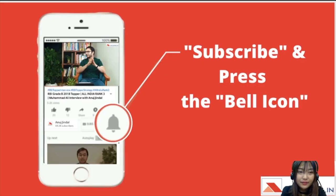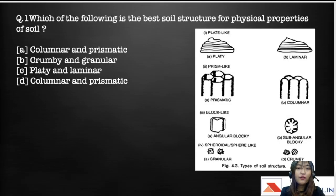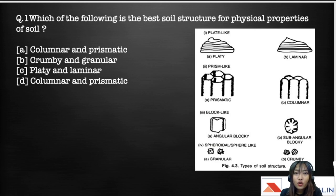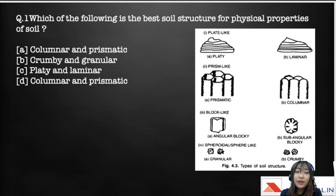Starting with the first question: which of the following is the best soil structure for physical properties of the soil? First and foremost, we need to understand the classification of soil structures. Classification of soil structures is divided on the basis of three categories: the type of the soil, the class of the soil, and the grade of the soil.